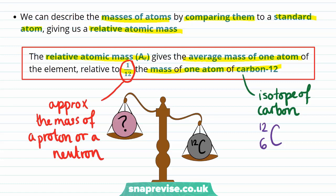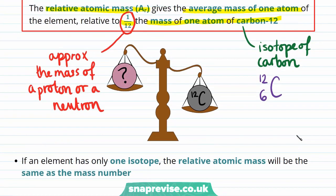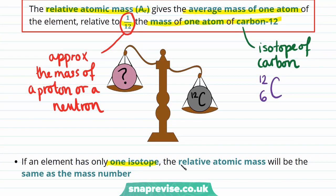1/12 the mass of one atom of carbon-12 is only approximately the mass of a proton or neutron, because there will be some mass due to electrons. But in general, we can say that if an element only has one isotope, its relative atomic mass will be exactly the same as its mass number.